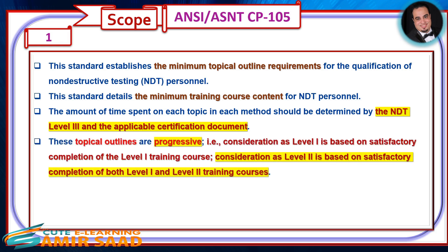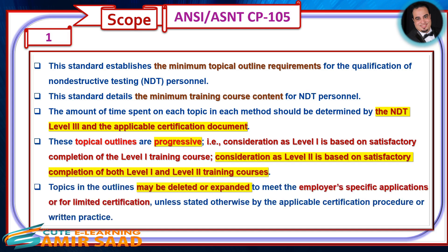These topical outlines are progressive. Consideration as Level 1 is based on satisfactory completion of the Level 1 training course. Consideration as Level 2 is based on satisfactory completion of both Level 1 and Level 2 training courses. Topics in the outlines may be deleted or expanded to meet the employer's specific applications or for limited certification, unless stated otherwise by the applicable certification procedure or written practice.